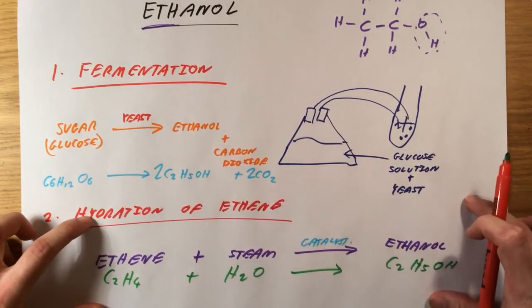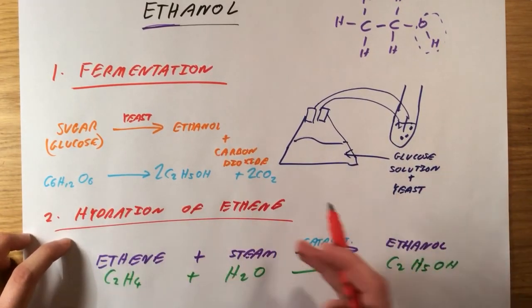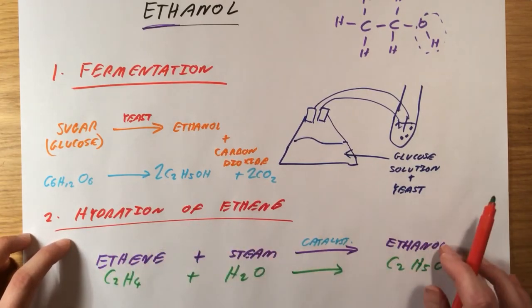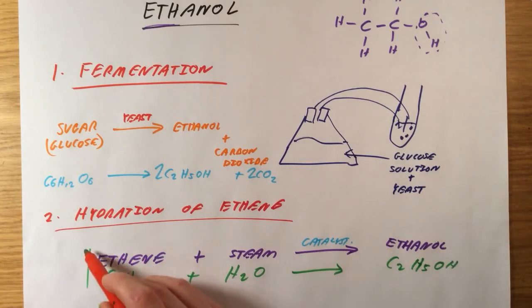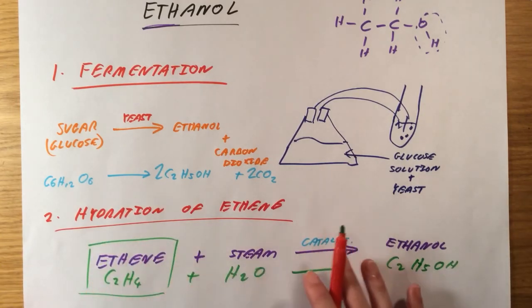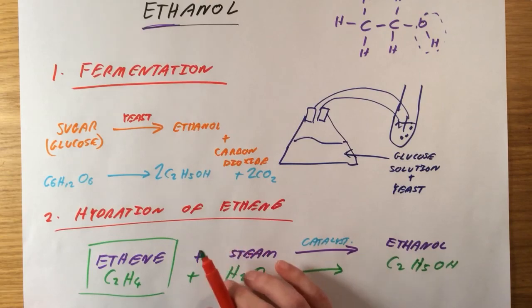So remember, this method here, although it is much, much faster, we can just continuously pass steam over ethene and tap off the ethanol that will produce. However, ethene is non-renewable, and therefore this process, although it's faster, we're not going to be able to use it forever.